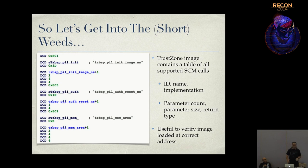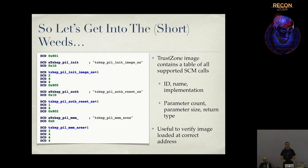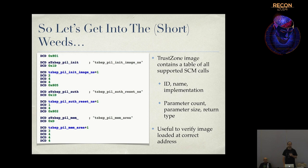That big chart Nathan had with all those function names - those strings are inside TrustZone, and it's a little worse than that. There's a big table inside TrustZone that lists each SCM ID - the way you address service calls. Each entry has the ID, the name of the function, a pointer to where the function's implemented in memory, and information about what the function returns: whether it returns a status code or a memory buffer. That's really helpful for fuzzing.